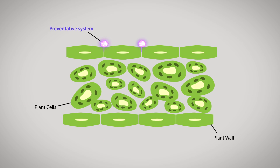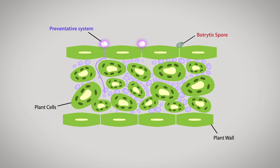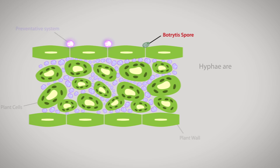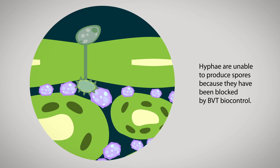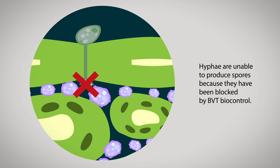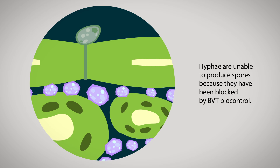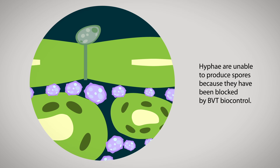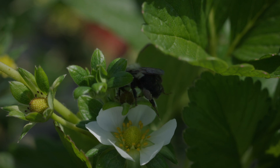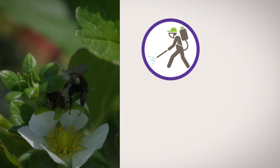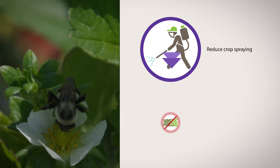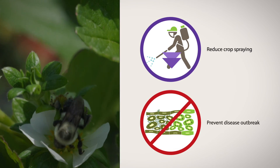BVT has developed a preventative system using a natural biological that occupies the space where botrytis would normally infect a plant. Using bees for delivery, the BVT system can save many unnecessary sprays and prevent outbreaks of disease.